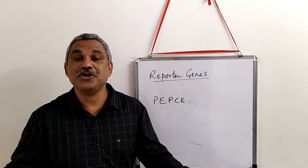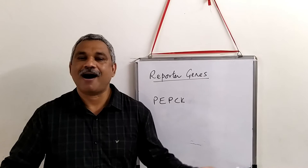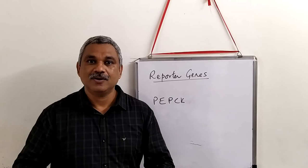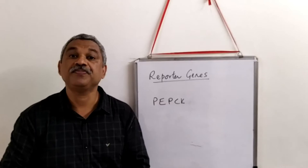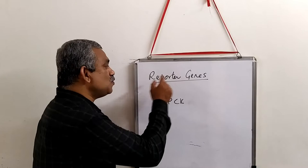Gluconeogenesis, if you want to study, the best organ to study is liver or the kidney. But in order to study that, one has to sacrifice an animal for the liver and kidney in order to study gluconeogenesis. So scientists have developed a technique that is known as reporter genes.